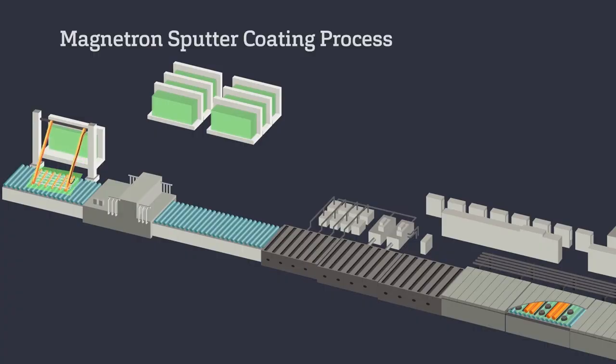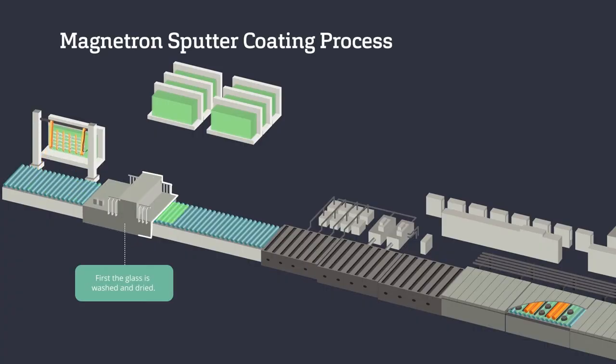Riding along a conveyor system, the glass is first washed and dried. Pressure locks then lead the glass into the coater.